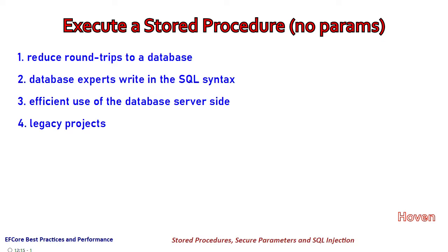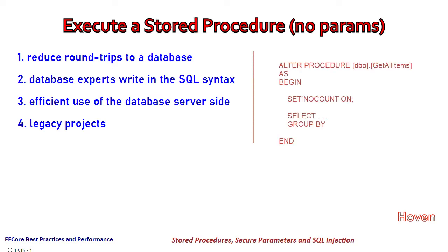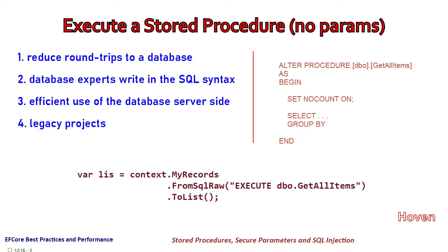Fourthly, legacy projects often have many stored procedures already written into the database, so you have to execute them using your C# side — you are forced to do that because they are already written into the database. First of all, let us learn how to execute a stored procedure that doesn't accept any parameters. Suppose we have a stored procedure called GetAllItems that returns a list of items. You will have to add a model class to match the columns returned by this stored procedure, as explained in the previous tutorial. You can run the raw query: EXECUTE dbo.GetAllItems — this raw query will run without any parameters.